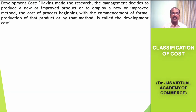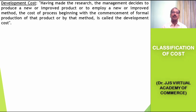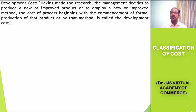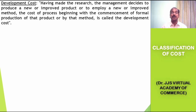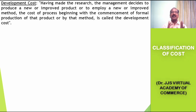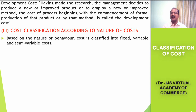The next concept is development cost. Having made the research about the new product, new method, or new utility for the existing material, the management decides to produce the new or improved product, or to apply the new or improved method of production, selling, distribution, or promotion. The cost of the process beginning with the commencement of the formal production of the product or by that method is called the development cost. Development cost is incurred after incurring the research cost.